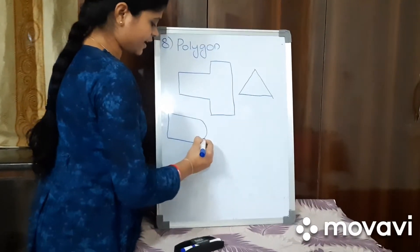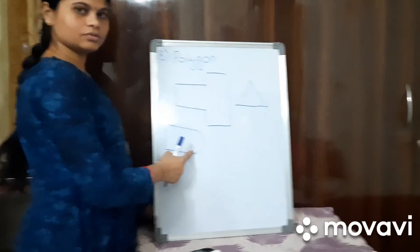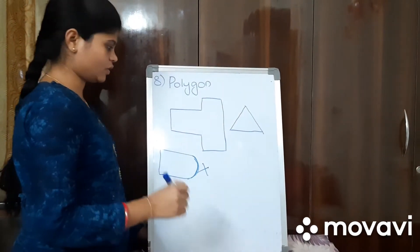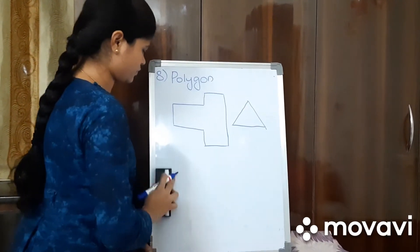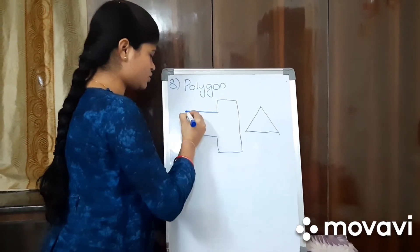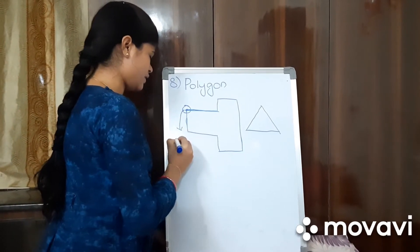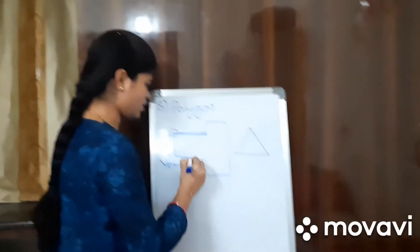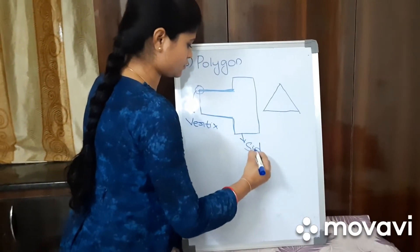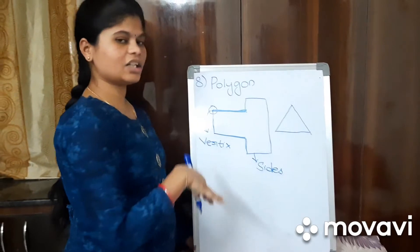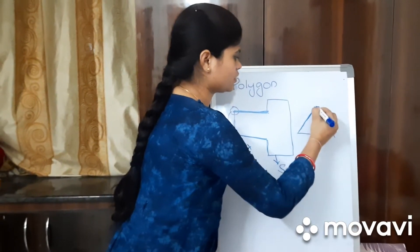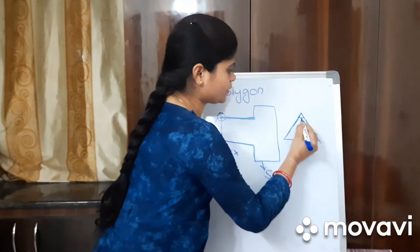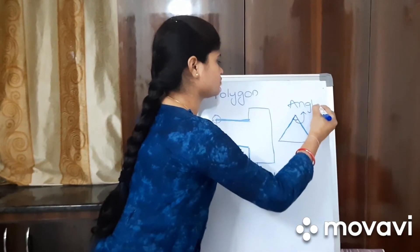A polygon is a diagram with any number of straight lines. However, if a figure has a curve, it is not a polygon. The points joining two sides are called vertices — a single such point is called a vertex. The lines are called sides. We will also learn about angles: the lines that form some angle between them are called angles.